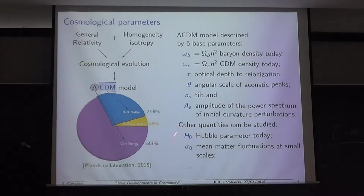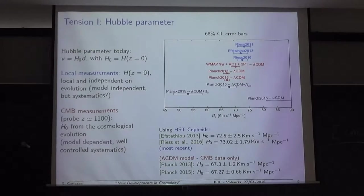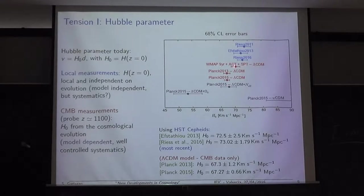I want to highlight two parameters because they are the characters of two tensions that appear between the cosmological and the local universe. Starting from the Hubble parameter: in blue there are three measurements determined using supernovae and Cepheids in the local universe at small redshift. The red points are the Lambda-CDM predictions obtained with the fit to the CMB data, both for WMAP and Planck. There is a tension of about three sigma with the most recent determinations.